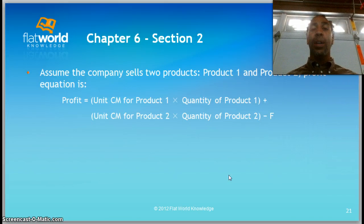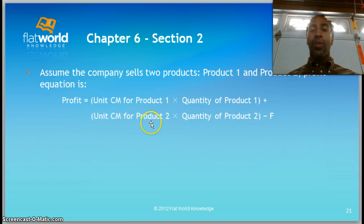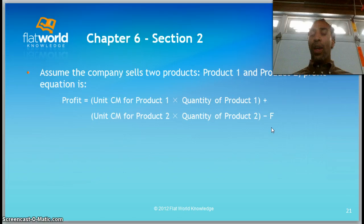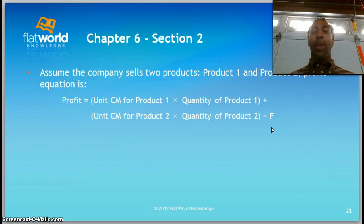Assume the company sells two products, product one and product two. The profit equation is the unit CM for product one times the quantity of product one, plus the unit CM for product two times the quantity of product two, minus fixed cost. That equation may look a little unusual on a PowerPoint, but in the next few slides we'll show you how it actually looks when you do the math.